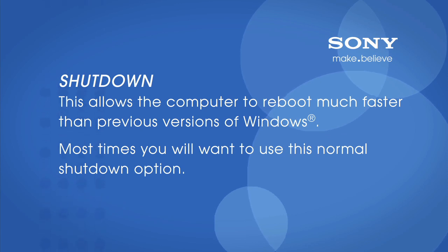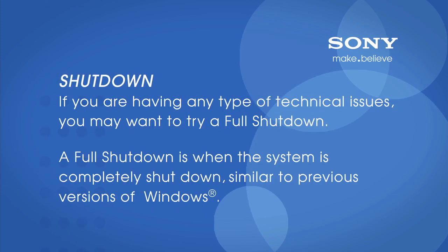Most times you will want to use this normal shutdown option. If you are having any type of a technical issue, you may want to try a full shutdown. A full shutdown is where the system is completely shut down, similar to the previous versions of Windows.